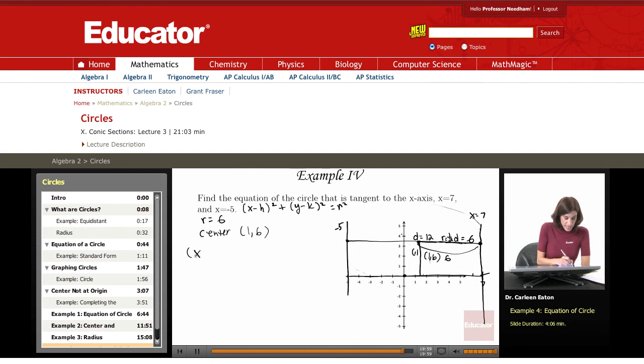And that gives me an equation: (x minus 1) squared plus (y minus 6) squared equals the radius squared. If r equals 6, then r squared equals 36.